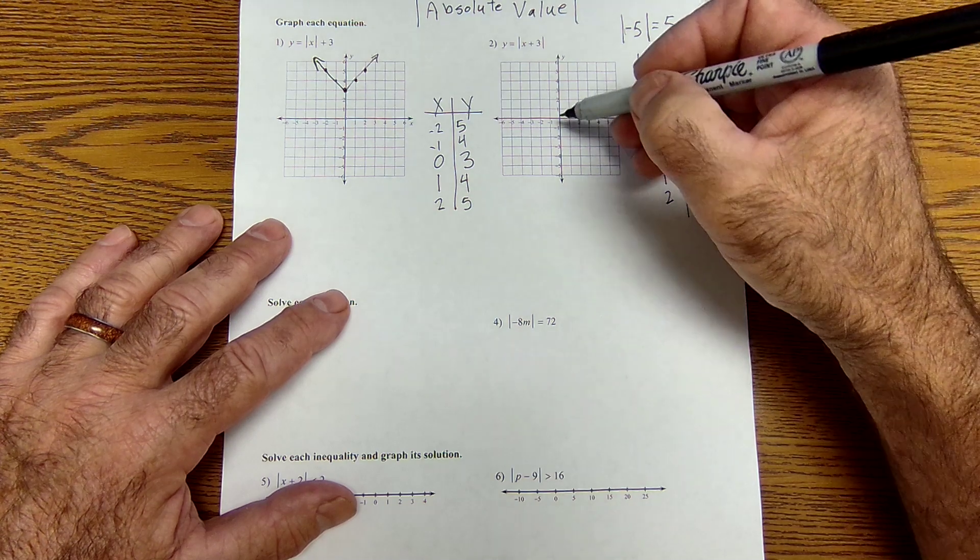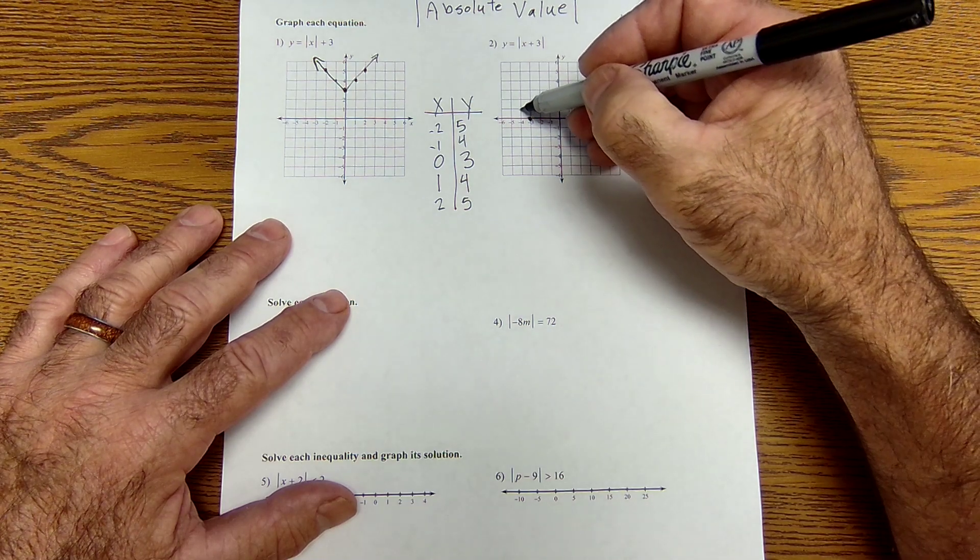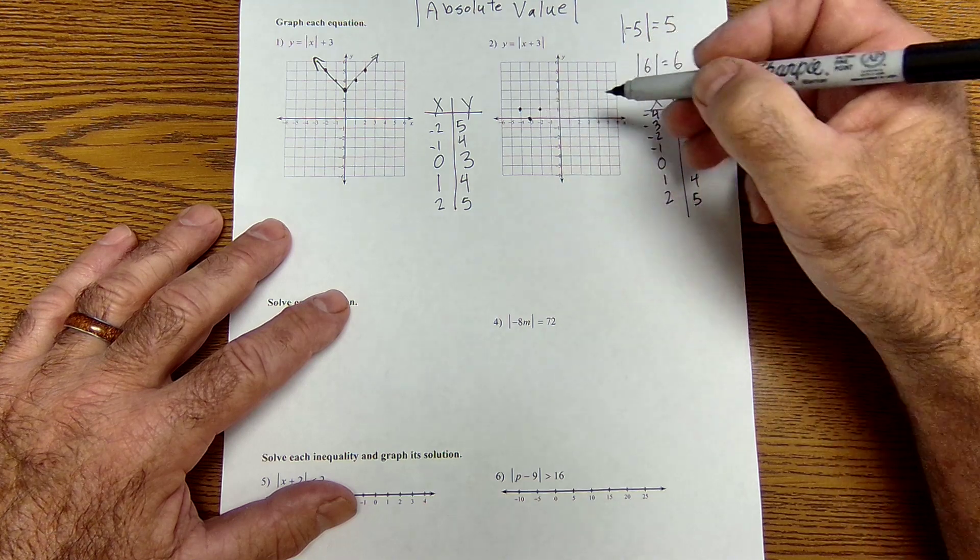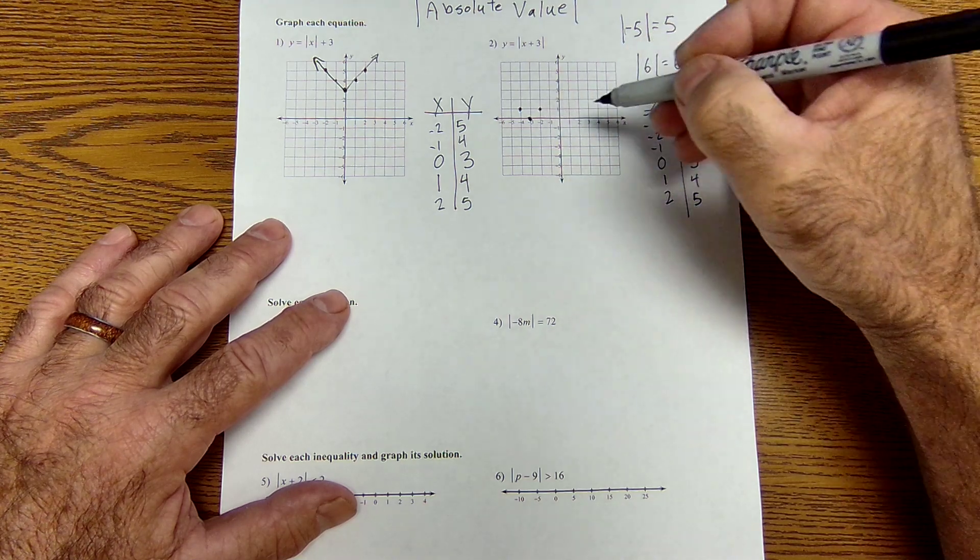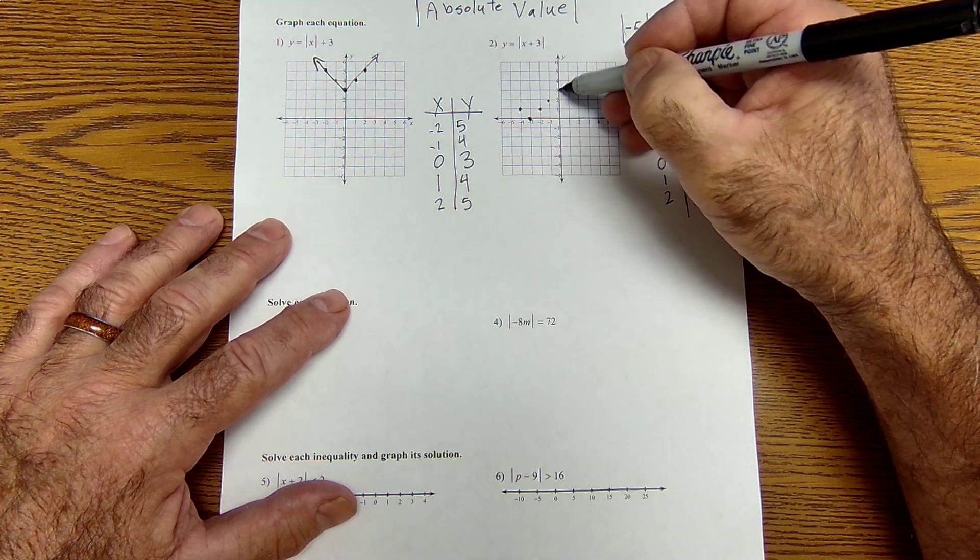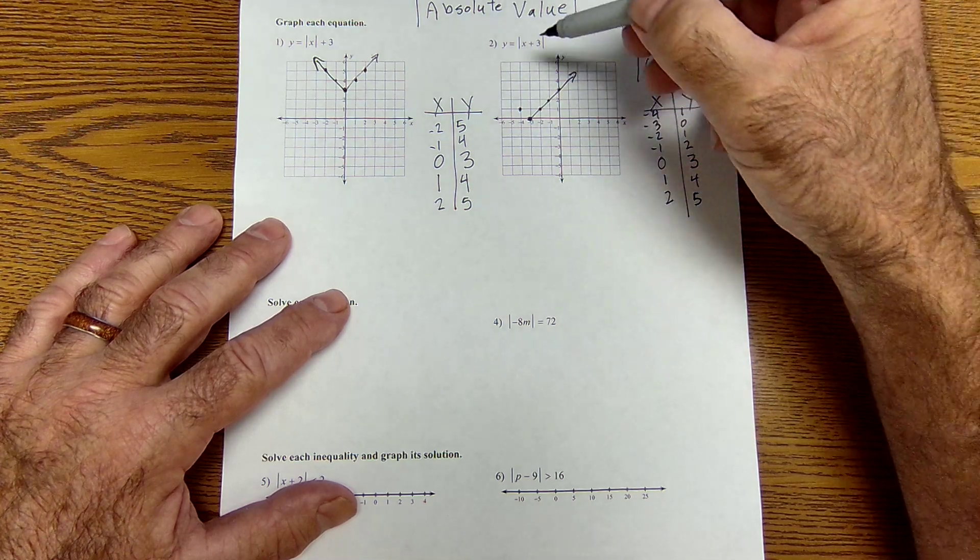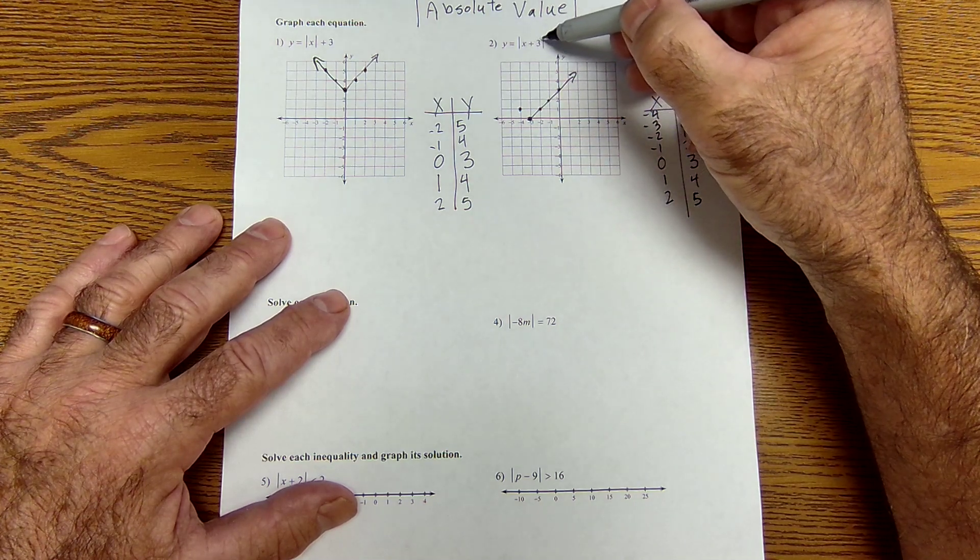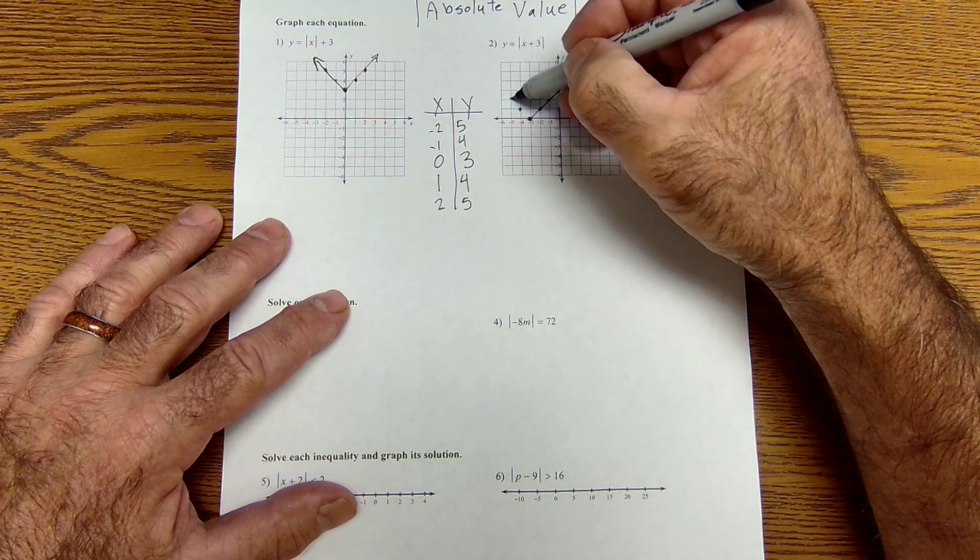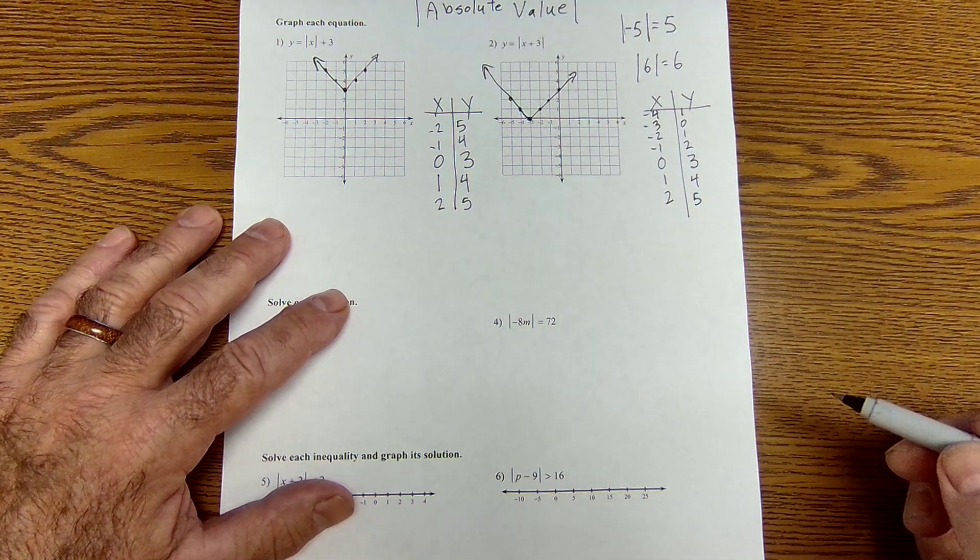Negative 4 plus 3 is negative 1. Absolute value of that is 1. So I could see it's actually starting to repeat itself here around these values. So at negative 3, I'm up 0. At negative 4, I'm up 1. At negative 2, I'm up 1. At negative 1, I'm up 2. At 0, I'm up 1, 2, 3. Negative 5 plus 3 is negative 2. Absolute value of that negative 2 is positive 2. So at negative 5, I'm up 2.